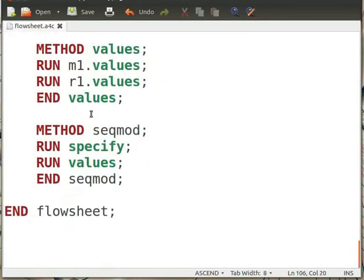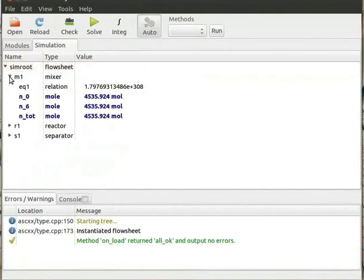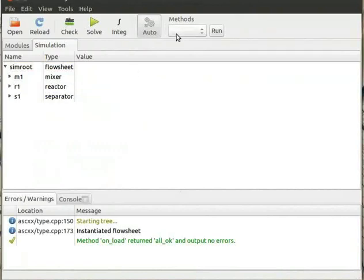Now define the method sec_mode and end the flowsheet. Open this model in Ascend. Now click on M1 mixer. You will see Ascend has assigned some default values to the streams n0, n6, and n_tot.